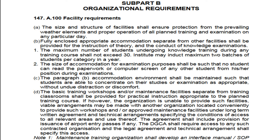The facility allows two batches per category per year. For example, if an institute has approval in B2 and B1.1, they can take two batches of 30 students each for B2, and two batches of 30 students each for B1.1. Additionally, basic training workshops and maintenance facilities must be available so students can do practical work in the workshop.